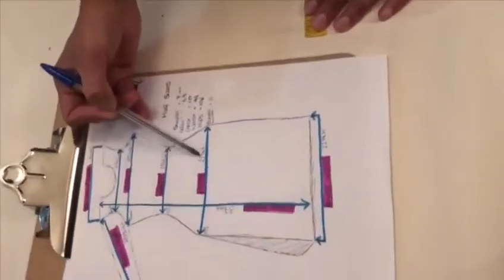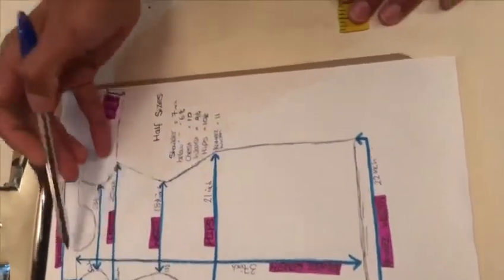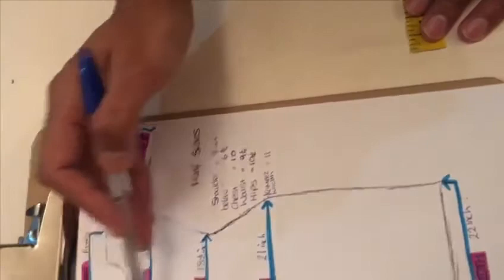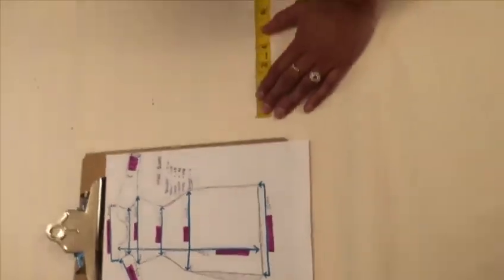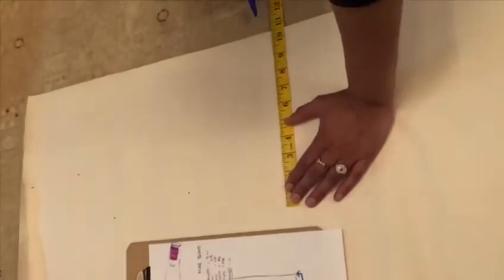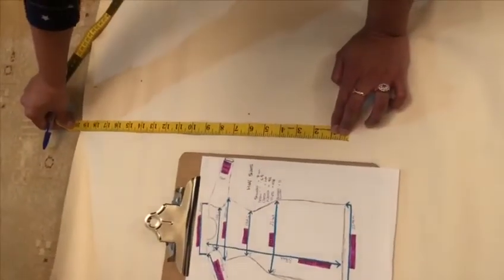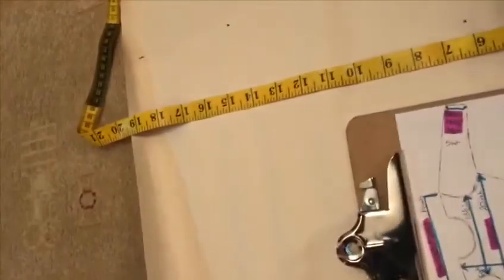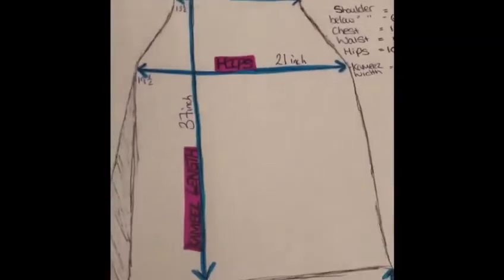Now let's do the hip. Half the measurement for the hip is 10 and a half inches, and from the top down it's 19 and a half. So we're going to do 10 and a half this way and 19 and a half this way. Mark it there.